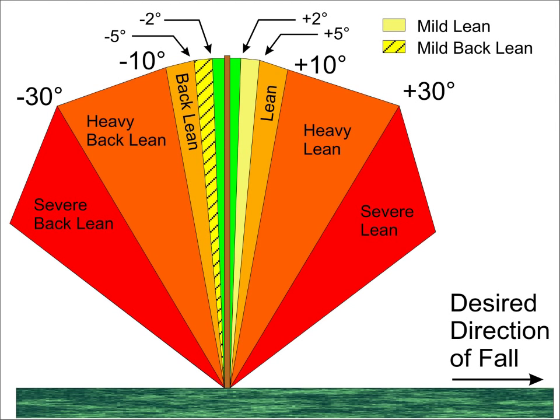For back leaners, anything but a mild lean will require rigging to pull the tree in the desired direction of fall. We will discuss back leaners in the next video in this series. A tree may have a lean component either to the side or in line with the direction of fall or it may simultaneously have both components.